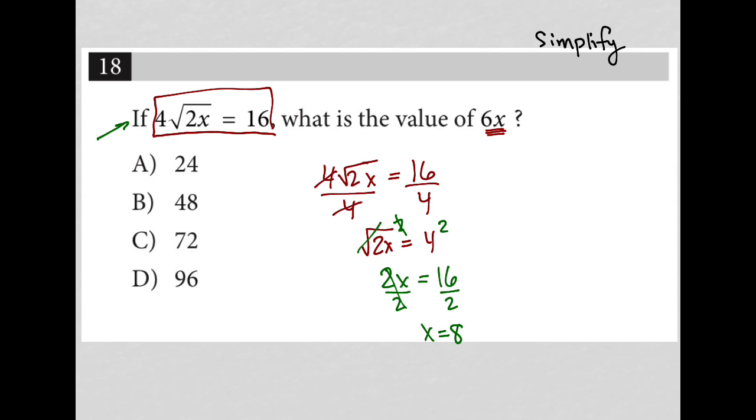Now, the question doesn't ask me for the value of x. And thankfully, 8 is not an option here, otherwise there would be a handful of students who would choose 8. The question is really asking for 6x. So now that I know that x is 8, I know that this is really asking for 6 times 8. And 6 times 8 is 48, so our correct answer here is choice B.